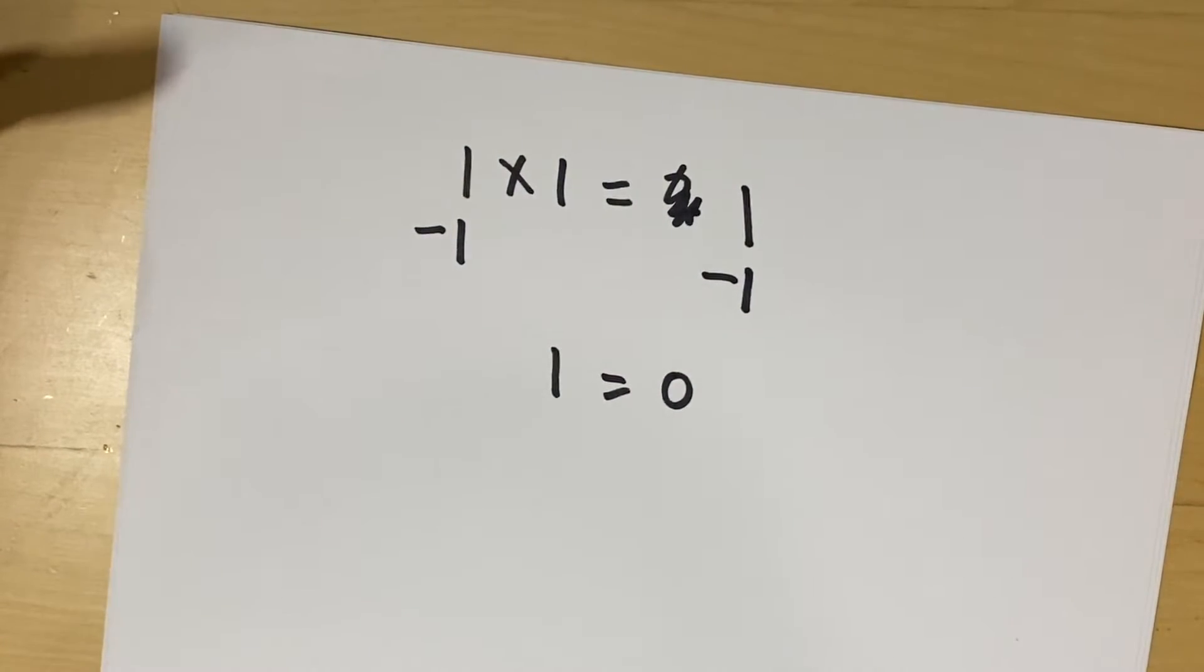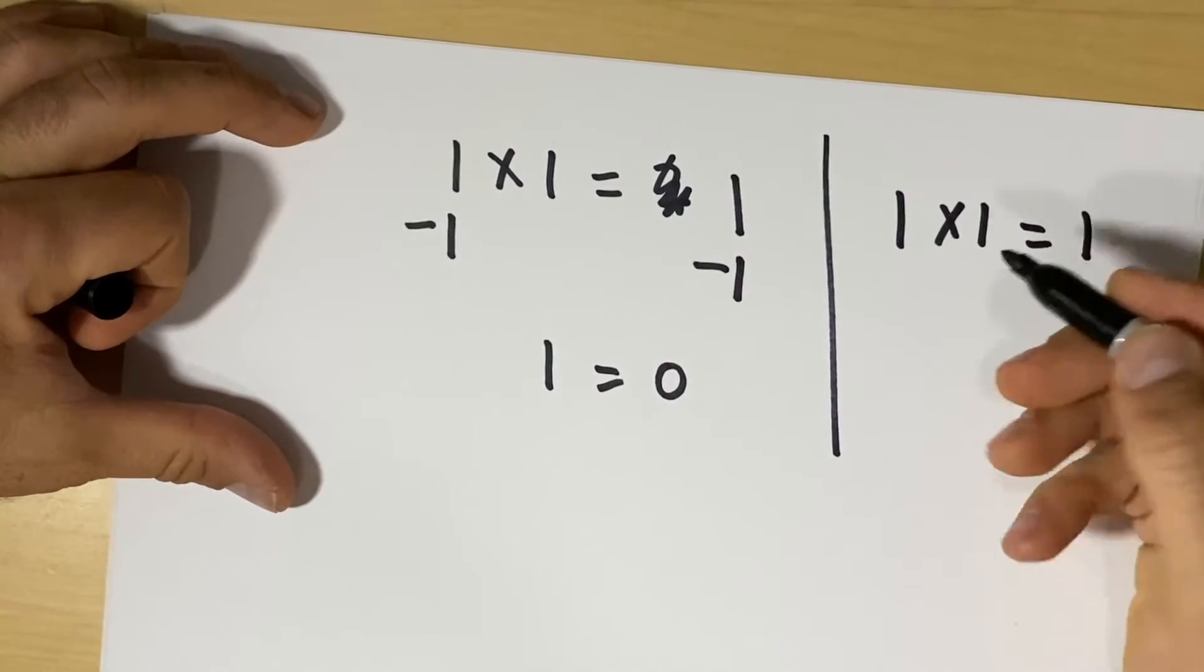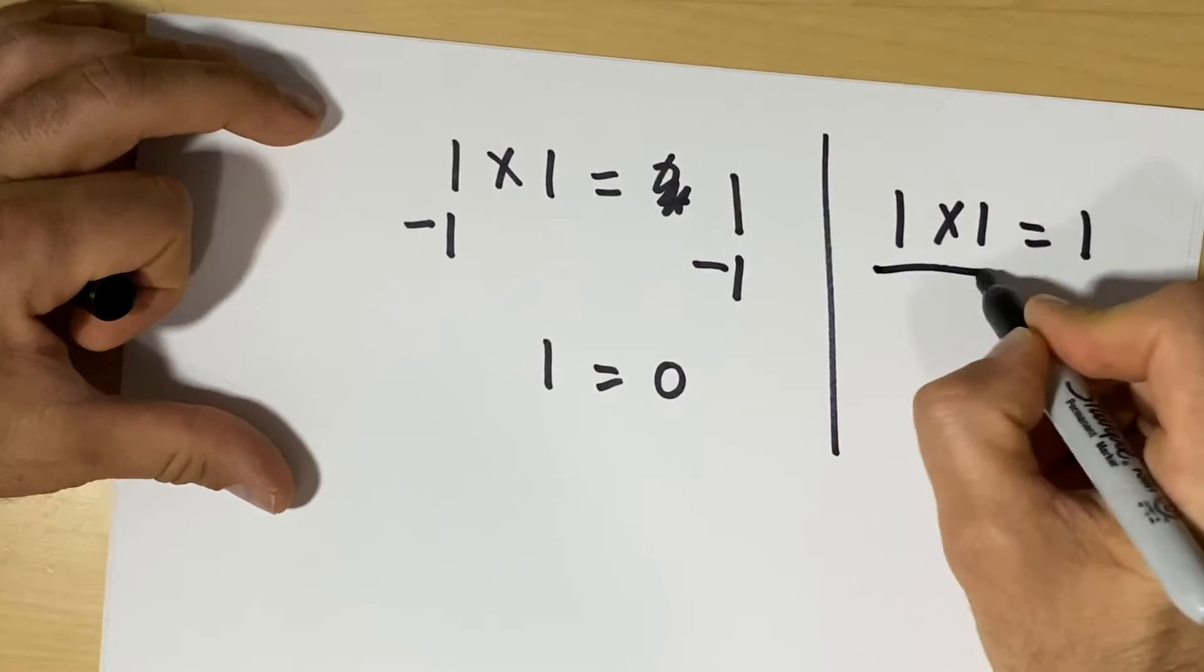Any math person would completely flip out because that's not how the identities work. If you have 1 times 1 equals 1, you wouldn't subtract 1 on both sides. You would do the opposite of times or divide.